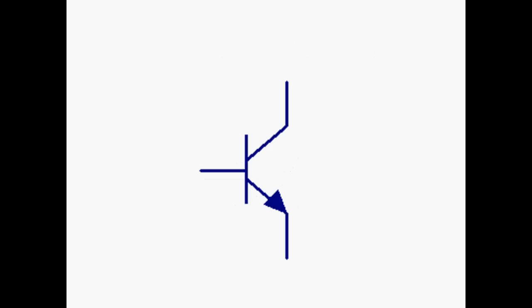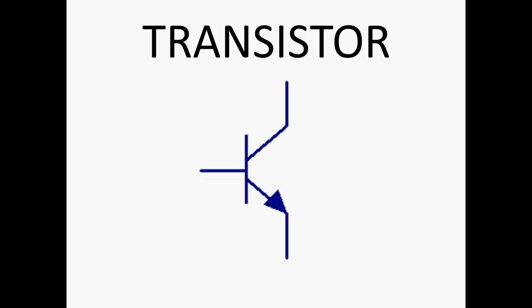This one's a transistor and the three legs are base, collector and emitter. This one works as an electronic switch or an amplifier of current, so it can amplify a small signal or it can use a small signal to switch on another part of a circuit.